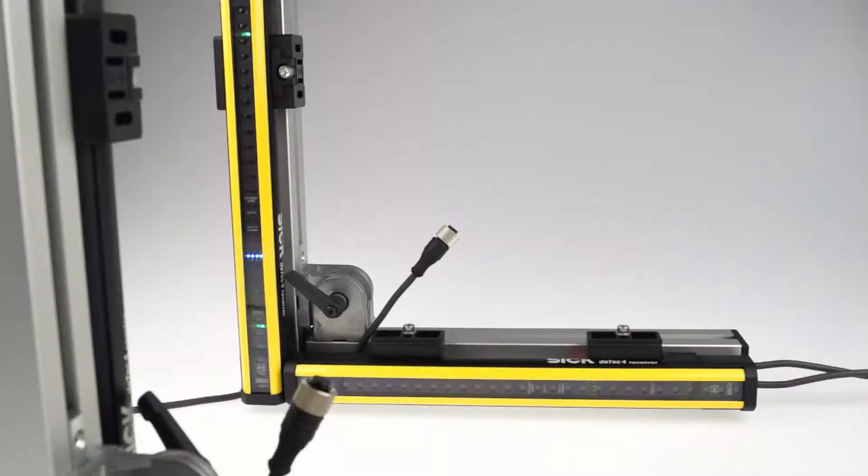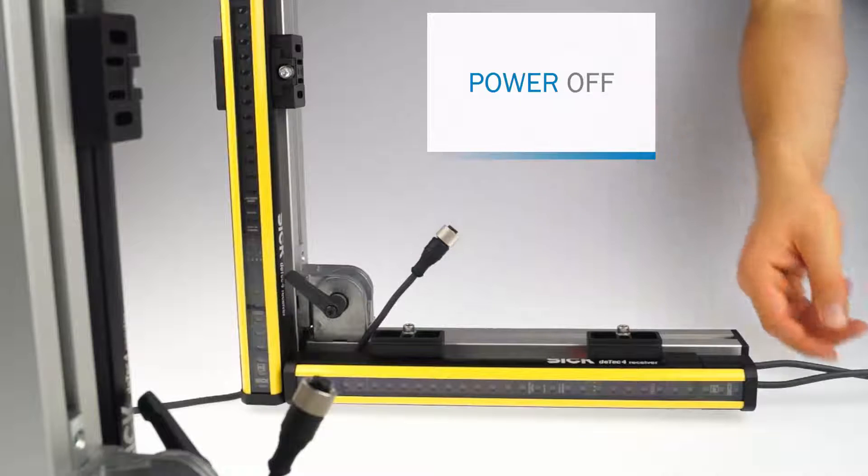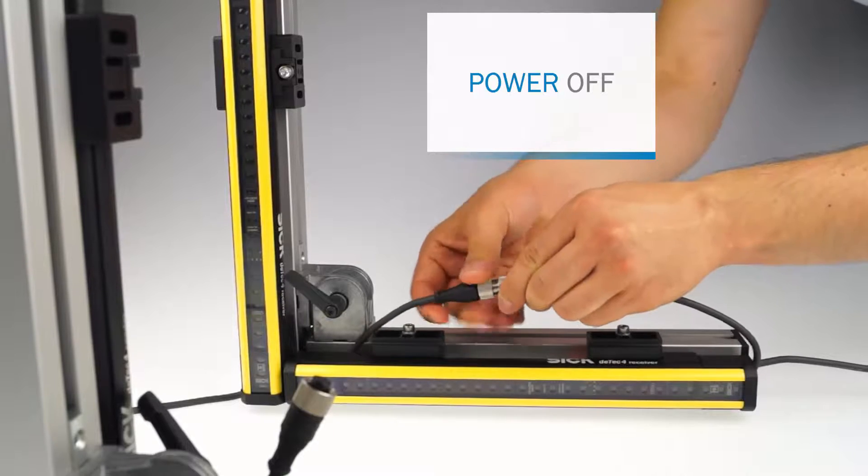To cascade another sender-receiver pair to an existing stand-alone system you need the system plug with extension connection on at least one sender and one receiver. Now, after disconnecting the system from the power supply, you simply connect the other devices to the extension connection from the system plug of the previous device in the cascade.